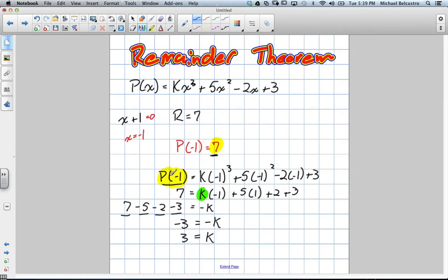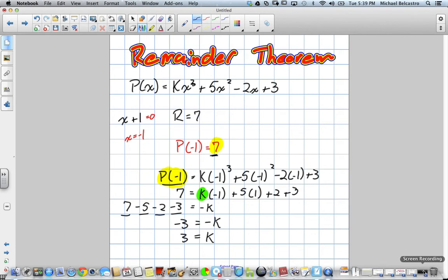So instead of reversing synthetic or long division, we can plug our value in, set it equal to our remainder, and isolate our unknown coefficient.